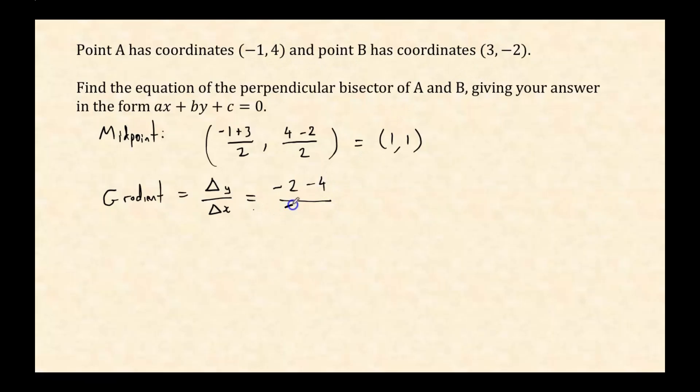So our numerator is -2 minus 4, so that's -6. And 3 minus -1 is 3 plus 1, so that's 4. So that's going to simplify down to -3/2. Alright, so that's the gradient of the line connecting A and B.